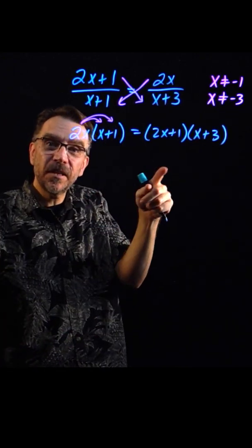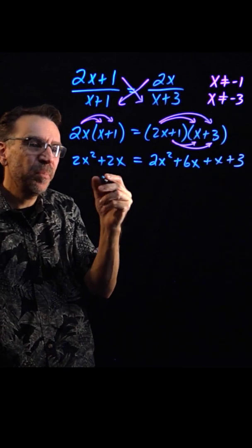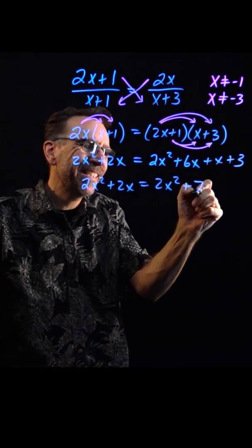Let's distribute these. Okay, now combining like terms and simplifying, we have 2x squared plus 2x equals 2x squared plus 7x plus 3.